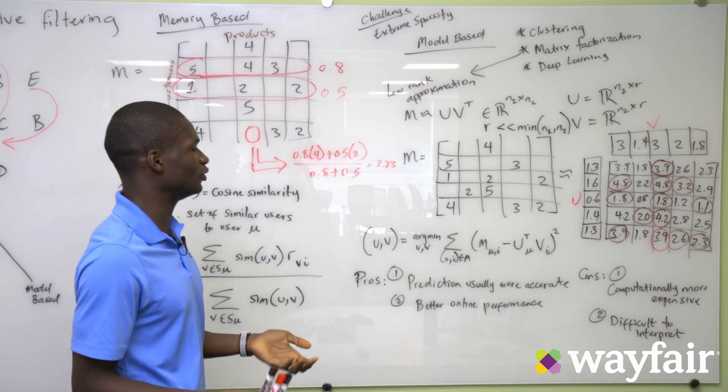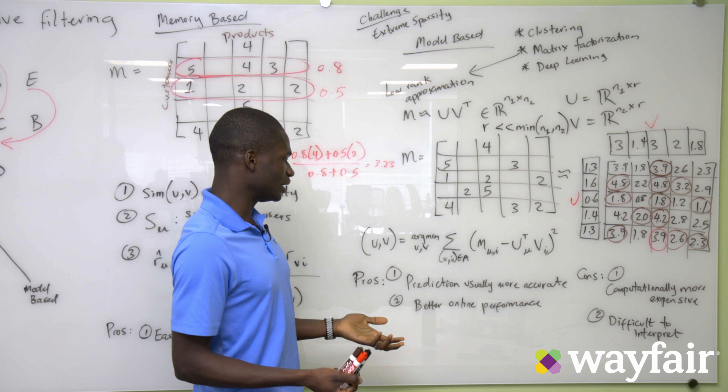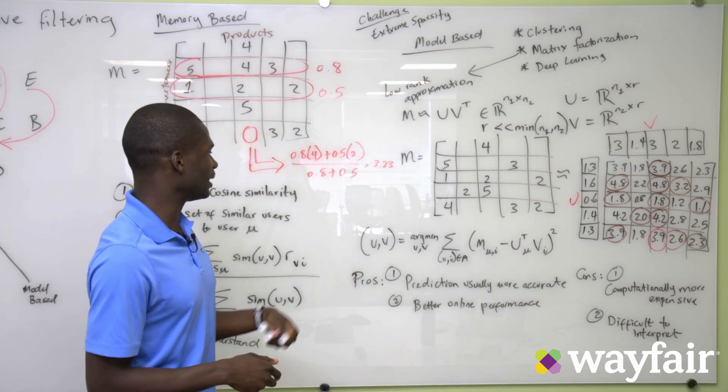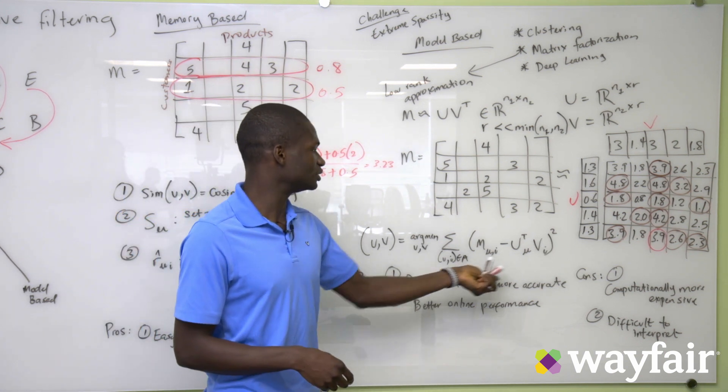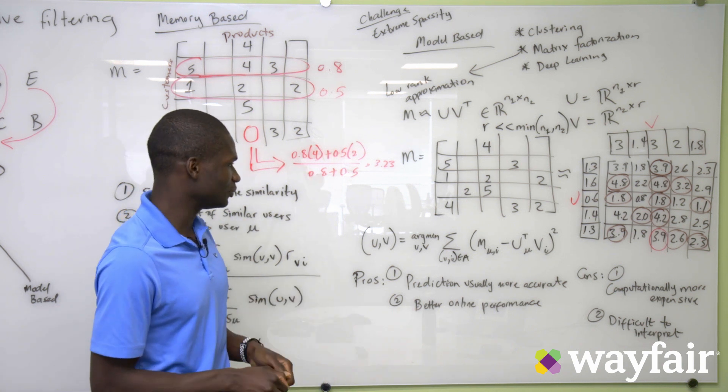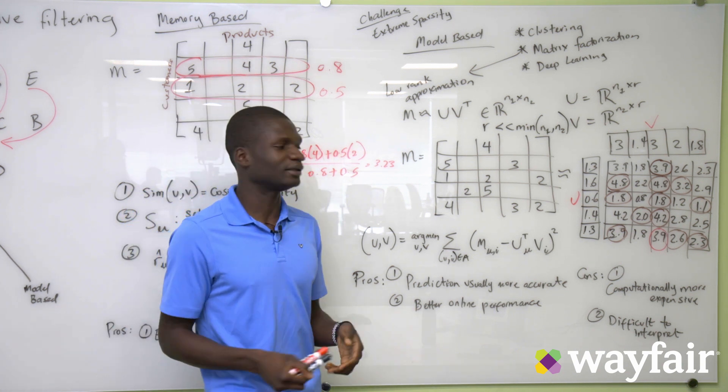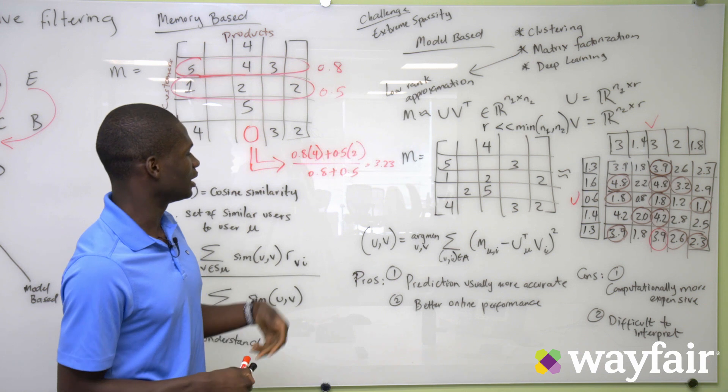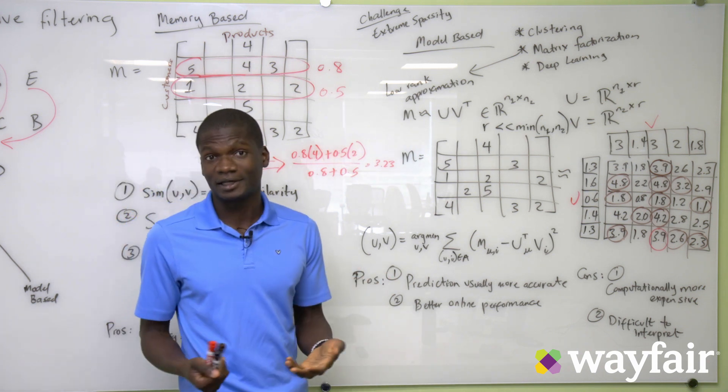So how can we solve for U and V? Usually, we can solve for U and V by solving this objective function. It's an optimization problem. And we can easily find the optimal U and V by using gradient descent.